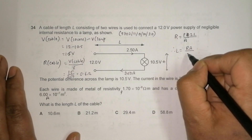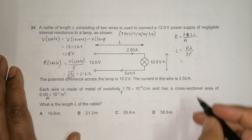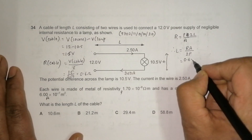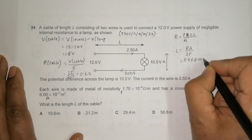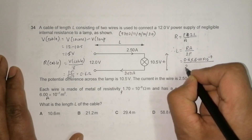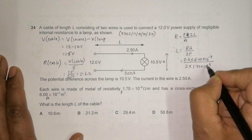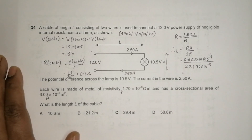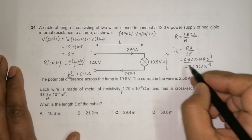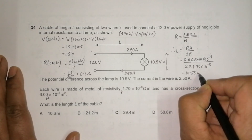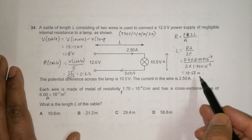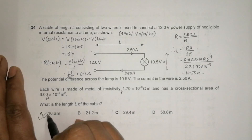Substituting the values: l = RA/(2ρ), where R is 0.6, A is 6.00 × 10⁻⁷, and ρ is 1.70 × 10⁻⁸. Calculating: 0.6 × 6.00 × 10⁻⁷ divided by 2 × 1.70 × 10⁻⁸ gives 10.56 meters. The closest answer choice is 10.6 meters, so 10.6 is the correct choice.